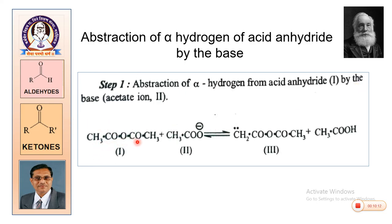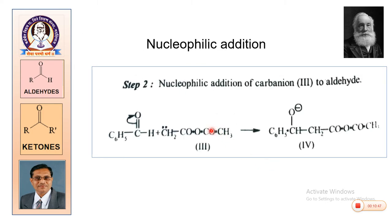In step 1: acetic anhydride (CH₃CO-O-COCH₃) reacts with the base sodium acetate (CH₃COONa). The acetate ion (CH₃CO⁻) removes a proton from the anhydride. We get the first intermediate by removal of a proton from acetic anhydride. Compound 1 is acetic anhydride, compound 2 is the catalyst, and compound 3 is the first intermediate formed.